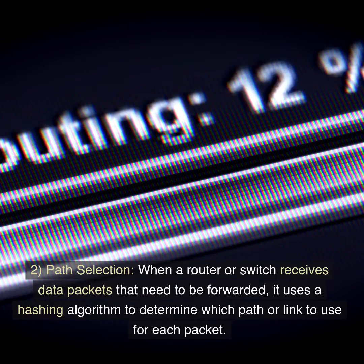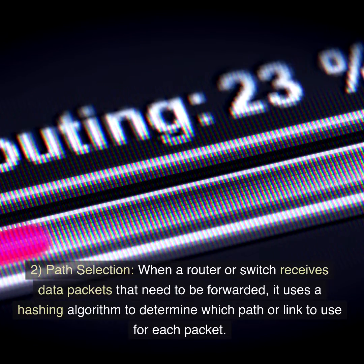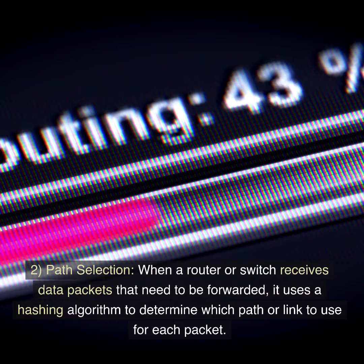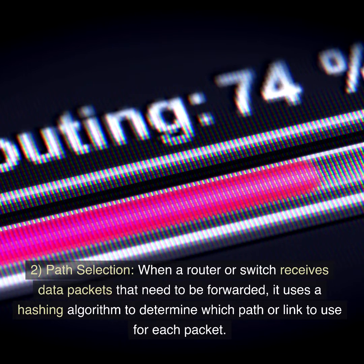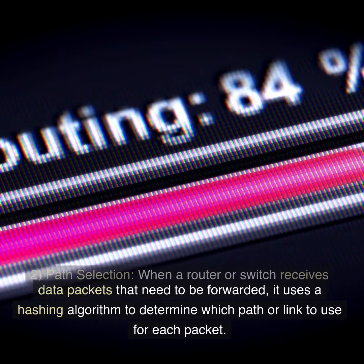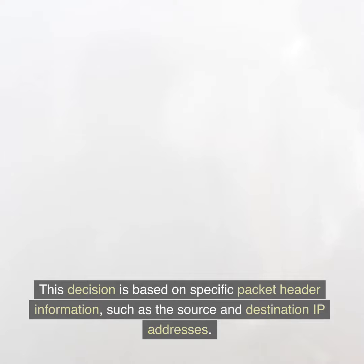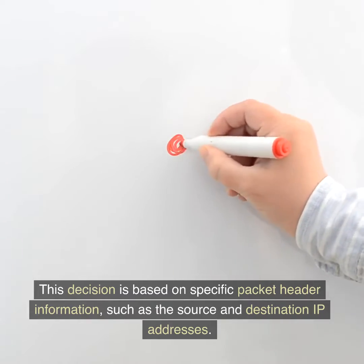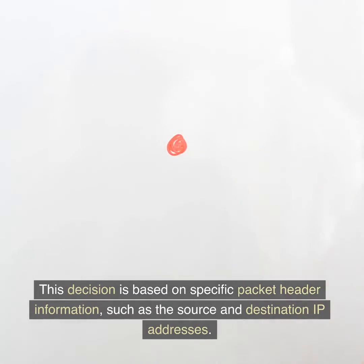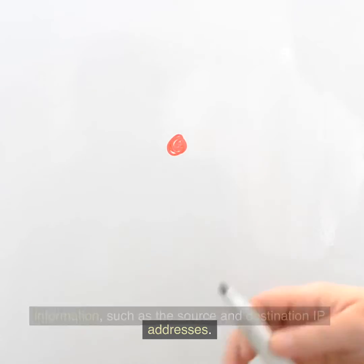2. Path Selection: When a router or switch receives data packets that need to be forwarded, it uses a hashing algorithm to determine which path or link to use for each packet. This decision is based on specific packet header information, such as the source and destination IP addresses.